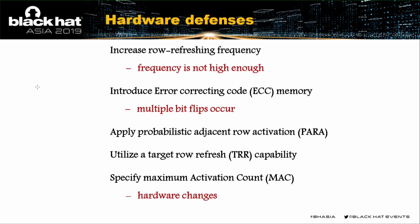The first intuitive hardware solution is to increase the row refreshing frequency from 64 milliseconds to 32 milliseconds. The idea is that an attacker must activate a row many times to induce bit-flips in adjacent rows, so increasing the refresh frequency allows rows to be refreshed before bit-flips occur. However, Rowhammer exploits have already succeeded even with a 32-millisecond refresh frequency.